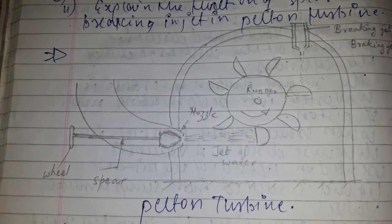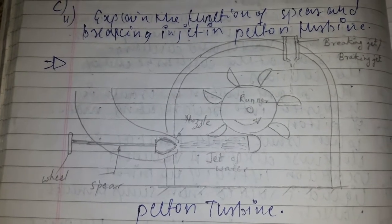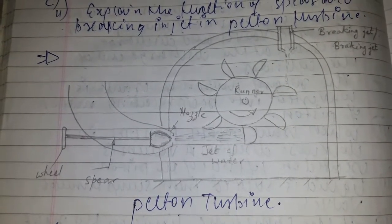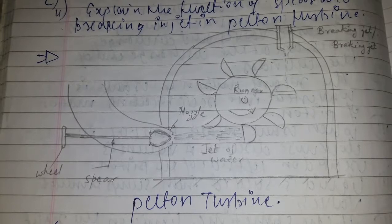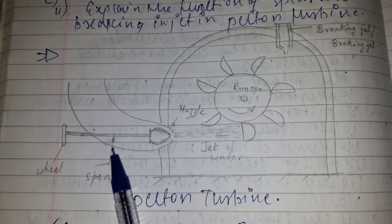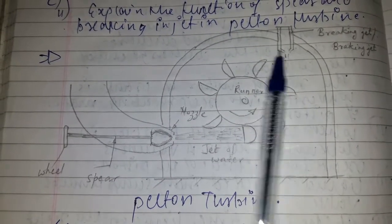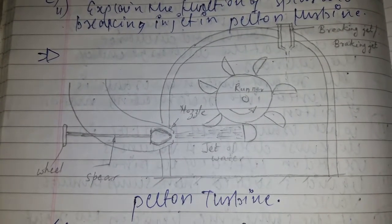This was the function of the braking jet. So this was the Pelton turbine and the function of the spear and braking jet.